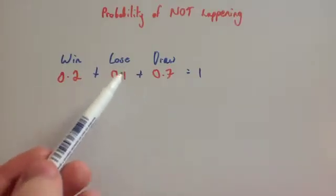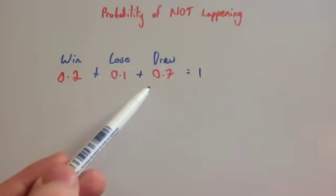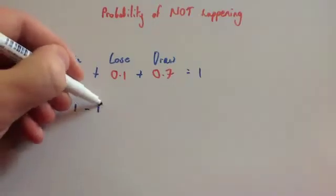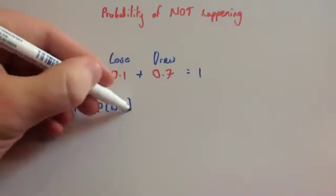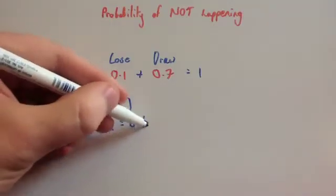So if you'd add those two probabilities together, not winning would be 0.8 because these two add together to give you 0.8. Notice that a way of doing that is to do 1 take away the probability of a win because if you've done 1 take away 0.2, you get 0.8.